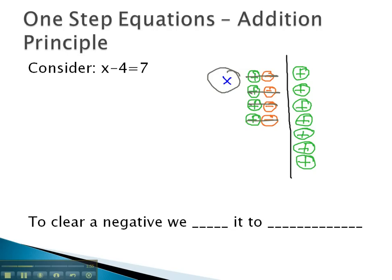Well, if we introduce four positives on the left side of this equation, we want to make sure everything stays balanced and stays the same, so we also are going to introduce four positives on the right side of the equation as well. And what we see is this one x is balancing with eleven of these positives. In other words, x is representing the number eleven.